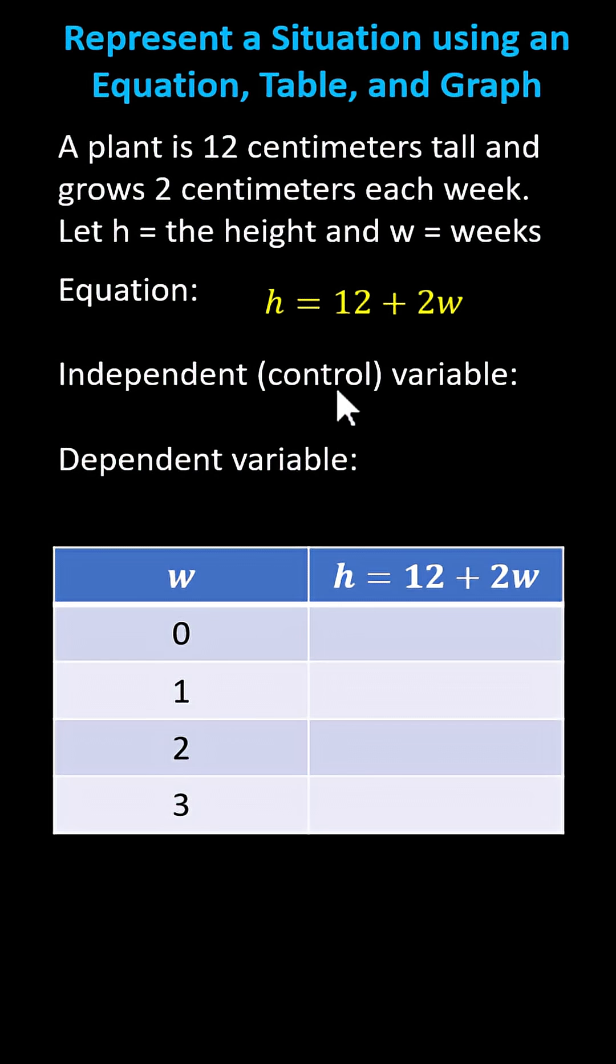The independent or control variable is w, the number of weeks, because the number of weeks controls the height. We can also think of the independent variable as the input variable.